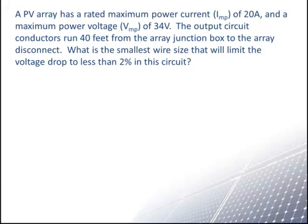A PV array has a rated maximum power current I_MP of 20 amps and a maximum power voltage V_MP of 34 volts. The output circuit conductors run 40 feet from the array junction box to the array disconnect. What is the smallest wire size that will limit the voltage drop to less than 2% in this circuit?